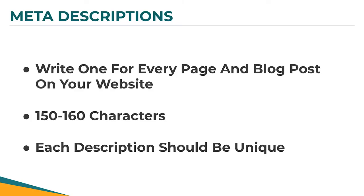Write a meta description for every page or blog post on your website — you've got 150 to 160 characters before it starts getting cut off, and each description should be unique on every page. Try not to copy descriptions you've used other places — if you've got a business listing on another website, don't just copy and paste that same description to your homepage meta description. Try to make it at least 60% unique. Google likes that your website content is completely unique and doesn't want to see content already out on other websites.